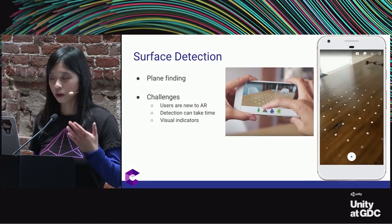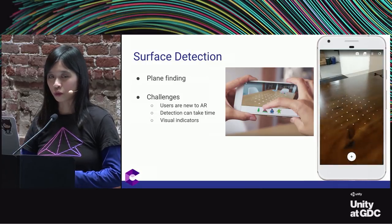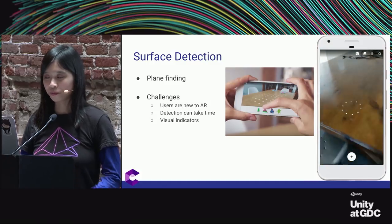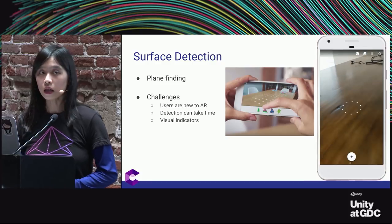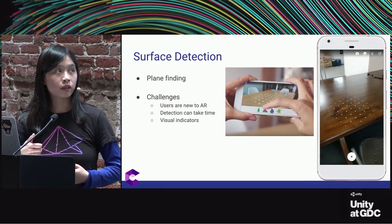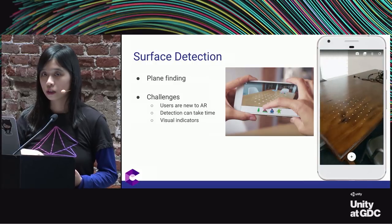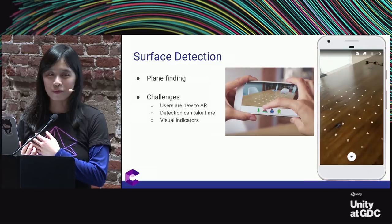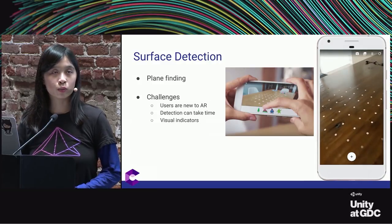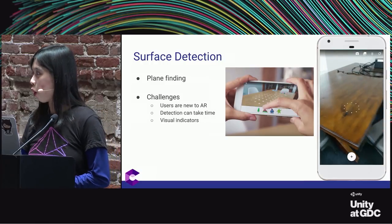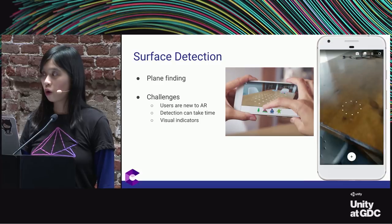One pitfall with showing tutorials is that you may not want to show them all the time and risk boring users, but you also want them to realize that plane detection is important. When placing objects, you can show the part of the plane right underneath the objects. In the Tabletop app, we chose to show the plane whenever scanning the surface. ARStickers chose not to show the plane at all and just let people place. This results in different user experiences — it depends on user education and play testing.